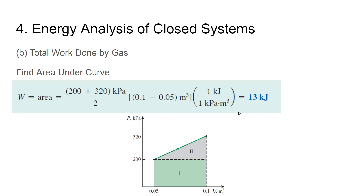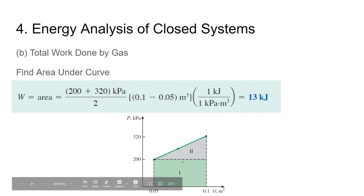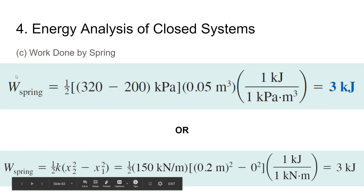The total work done by the gas is the integral of p dV, which is the area under the graph. Finding the area of the trapezoid gives 13 kJ. For the work done by the spring, we can either find the area of the triangle in region 2 (3 kJ), or calculate the elastic potential energy using ½kx², and both methods give the same answer of 3 kJ.